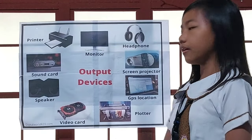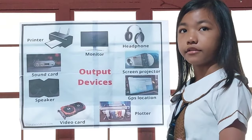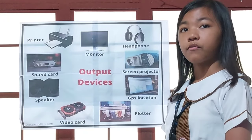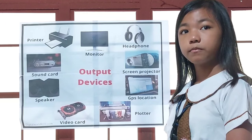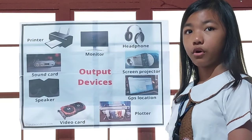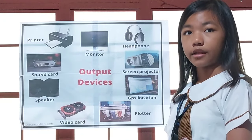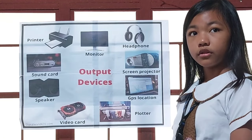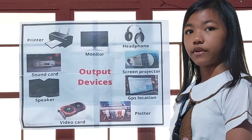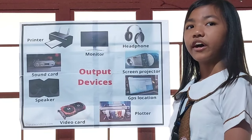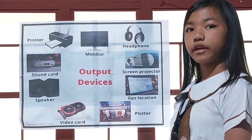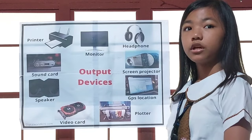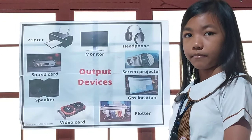Number 2: Printer. Printers are the output devices used for converting the virtual outcomes from the monitors into printed hard copies on different material surfaces. The computer transmits the image data to the printer, which creates the image on paper.